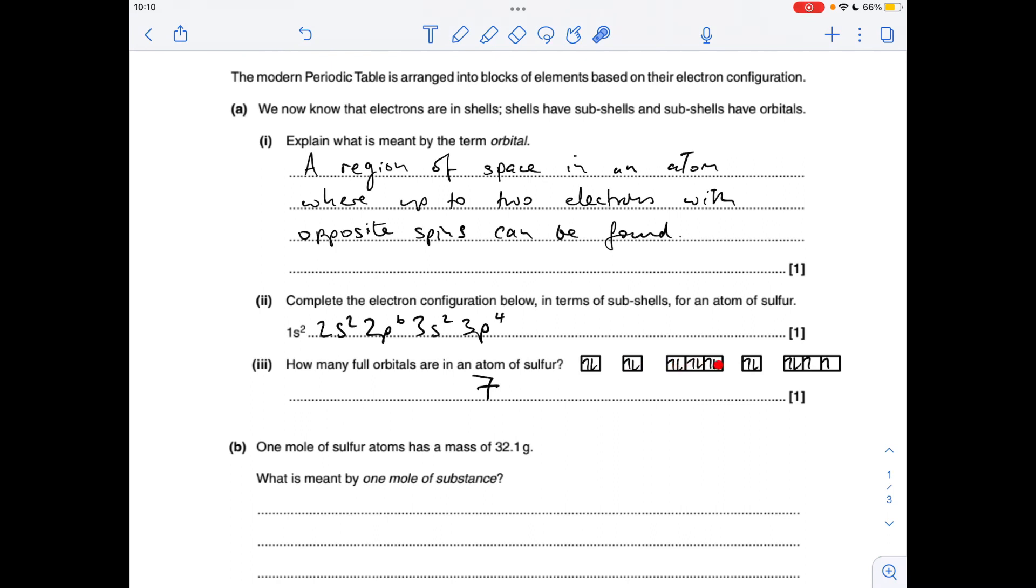So full, full, 3 full so that's 5, 6, and then here the 3p subshell, remember you're half filled before pairing up, so you've only got one full orbital there, so 7 all together.